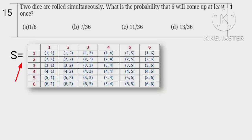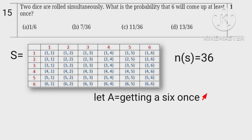Sample space for 2 dice thrown, N of S equals 36. Let E equal getting a 6 at least once, which has 11 outcomes. Hence probability is 11 upon 36.